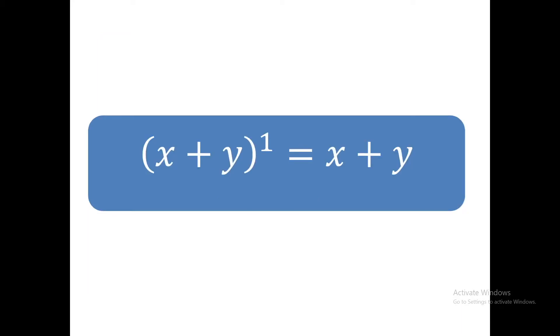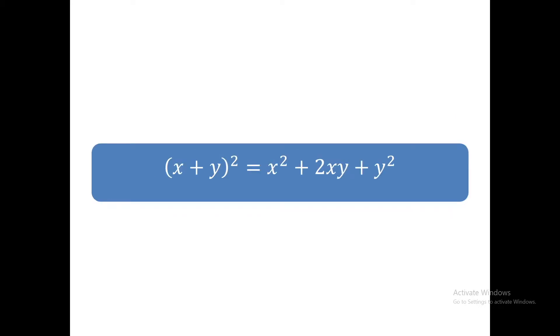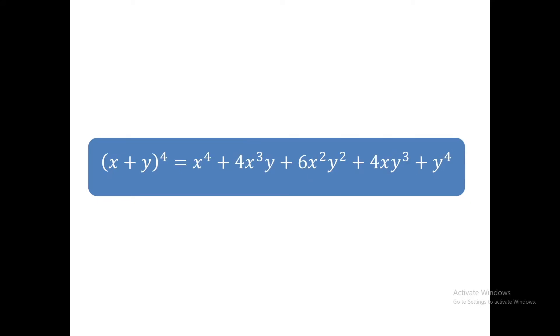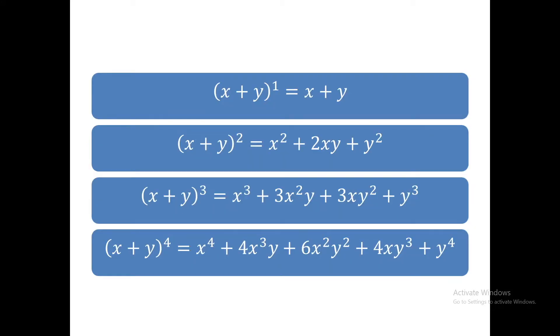For exponent one, x plus y power one equals x plus y. For exponent two, x plus y whole square equals x square plus 2xy plus y square. For exponent three, x plus y whole cube equals x cube plus 3x square y plus 3xy square plus y cube. For exponent four, x plus y power 4 equals x power 4 plus 4x cube y plus 6x square y square plus 4xy cube plus y power 4.